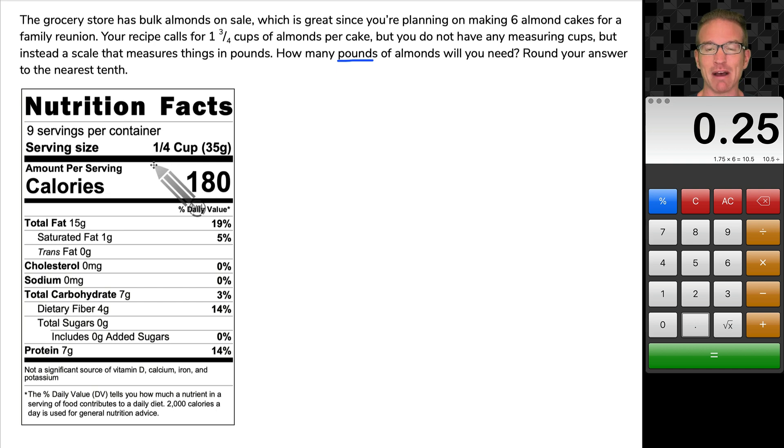One divided by four is 0.25. And when we divide that, we get 42. That means we need 42 of these servings. We need 42 of these one fourth cups.